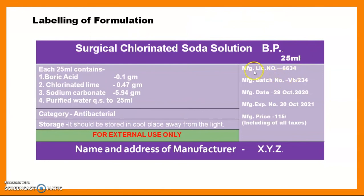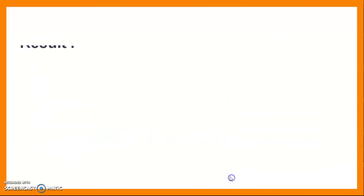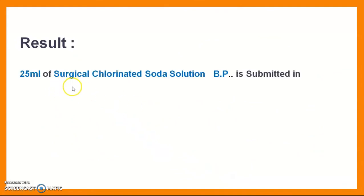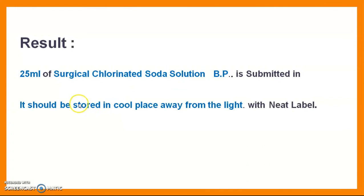Other manufacturing specifications on the label include: manufacturing license number, batch number, manufacturing date, expiry date, maximum retail price, and at the bottom, the name and address of the manufacturer. The result should be written as: '25 ml of Surgical Chlorinated Soda Solution BP is submitted in an amber-colored bottle, stored in a cool place away from light, with a neat label.'